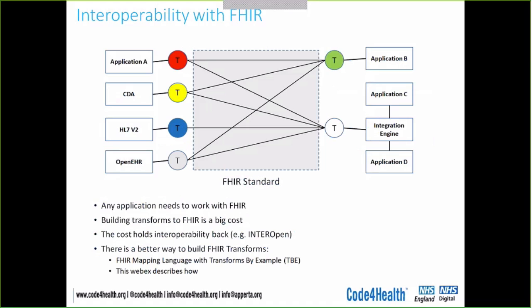FHIR's main purpose is as a transfer language for healthcare information. To use it in that way, you need to work with existing legacy applications and build transforms to and from FHIR. Whether you have a healthcare application with a database, or you're working with HL7 standards such as CDA or HL7 version 2, or OpenEHR standards, or through an integration engine, you have to build a transform — though those may be hosted on your integration engine rather than on the application itself.